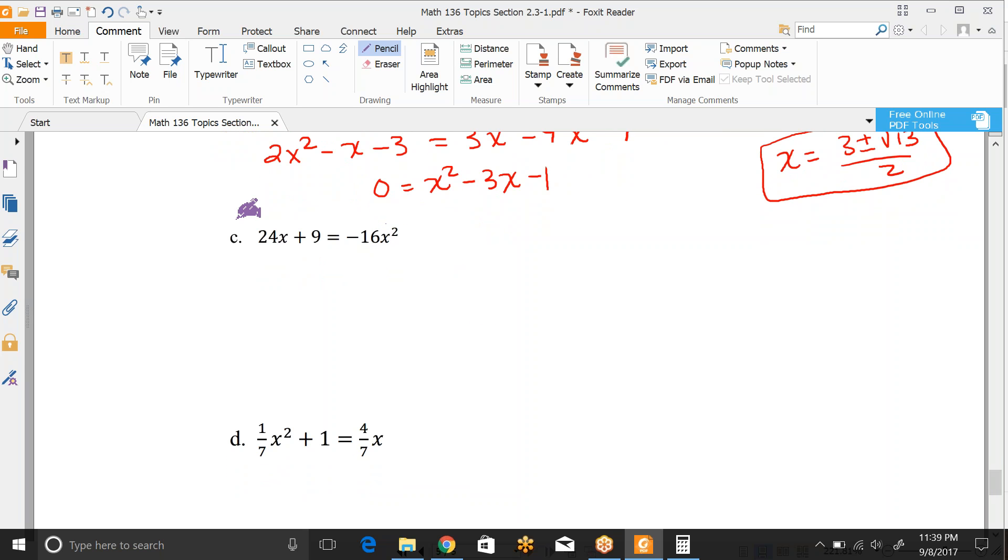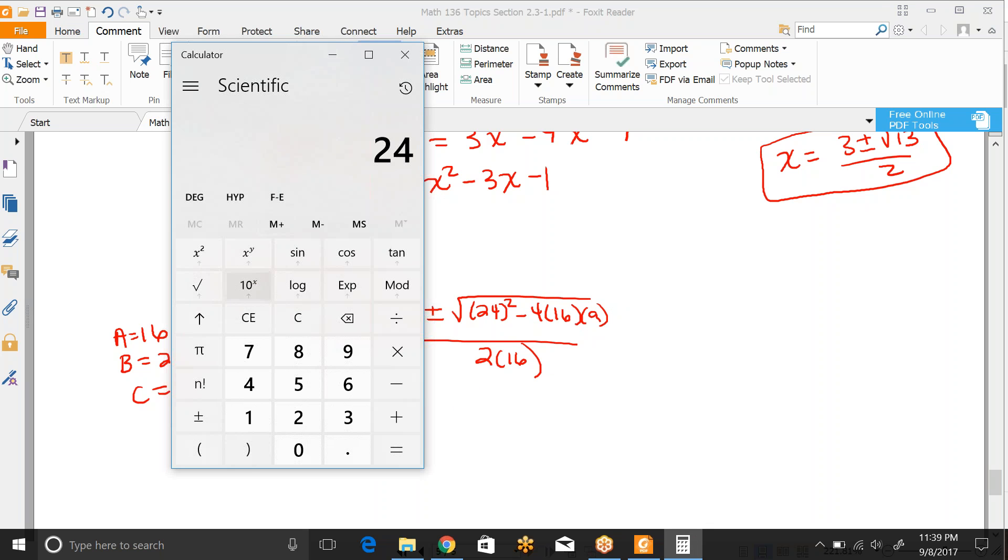Let's look at c. I would start by moving the 16x² over so that this looks more like a traditional trinomial which we have to be in standard form to use quadratic formula. So my a here is 16, my b is 24, and my c is 9. So this would be x = -24 ± √(24² - 4(16)(9)) / 2(16). So 24² is 576, and then this is negative 4 times 16 times 9, and then we add that or subtract that answer.